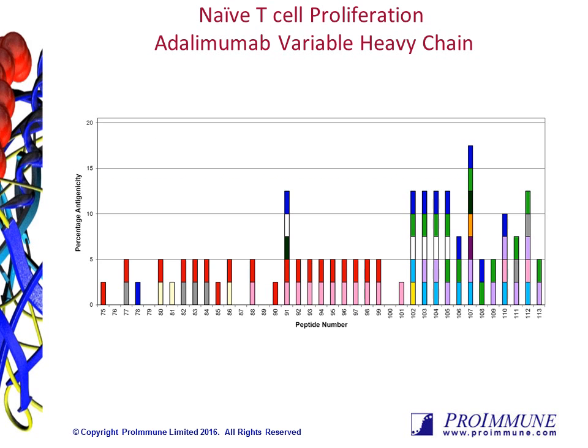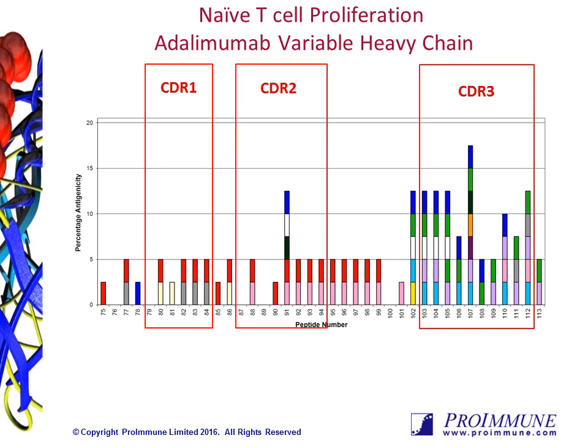An example of naive T-cell proliferation assay data is shown here, taken from a case study that Proimmune performed on the Humira variable heavy chain sequence. We created an overlapping library of 15-mers from the variable heavy chain, and these peptides are shown on the x-axis. On the y-axis is the percent antigenicity, or the number of responding donors out of the total number tested. Each of the different bar colors represents a different donor. In this 40-donor study, the majority of the responses came against the CDR3 region of the heavy chain, with the highest response coming against test peptide 107, which was seven donors.